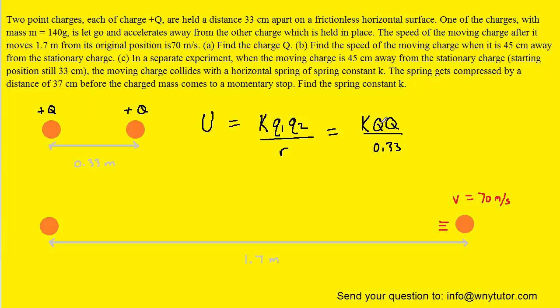We can simplify by noting that Q times Q is Q squared. This expression represents the initial amount of energy present, which is electrical potential energy.